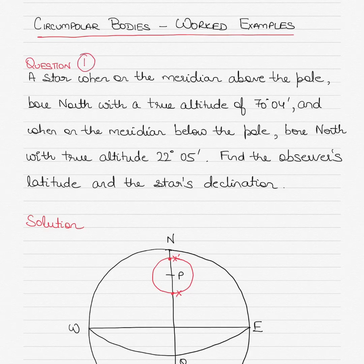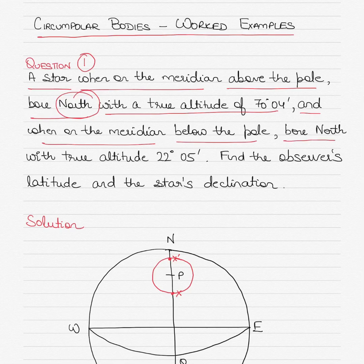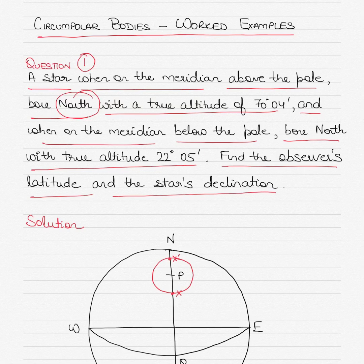Let's start with example number one. The question says that a star, when on the meridian above the pole, bore north with a true altitude of 70 degrees 04 minutes, and when on the meridian below the pole it again bore north with a true altitude of 22 degrees 05 minutes. Find the observer's latitude and the star's declination. Before you start, make sure you understand the meaning of each of these words and how you should be depicting it in the diagram.